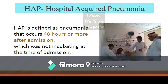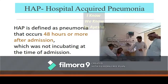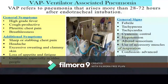Hospital-acquired pneumonia (HAP) can be defined as pneumonia that occurs after 48 hours of admission into the hospital, which was not incubating at the time of admission. This means the patient showed no signs and symptoms of pneumonia on admission but develops symptoms after 48 hours. Ventilator-associated pneumonia (VAP) refers to pneumonia arising 48 to 72 hours after endotracheal intubation.